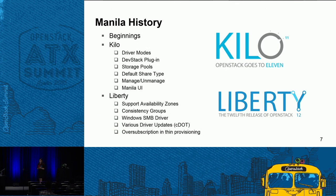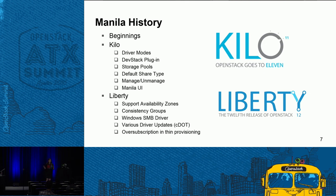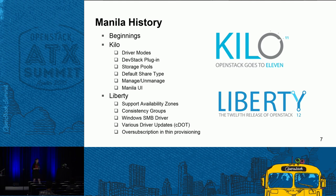Manila was first introduced in the Atlanta timeframe in 2014, and since then it's grown significantly. It was officially introduced as a core service in the Kilo release, which brought important features like storage pools — allowing different pools of different kinds of storage such as SSDs and spinning disks instead of one big pool. In the Liberty release, features like consistency groups were added, enabling you to combine shares based on consistency for data protection.